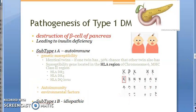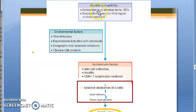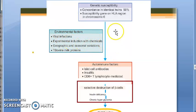So we have covered genetic susceptibility: the susceptibility gene on the HLA region of chromosome 6. Environmental factors include viral infections, bovine milk proteins, geographic and seasonal variations, and certain chemicals. All these can lead to destruction of beta cells.